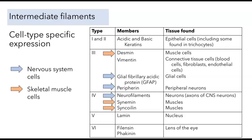Another group of intermediate filaments is expressed in skeletal muscle cells. Desmin, syncoilin are all found in muscles. And yet another type of intermediate filament, vimentin, is found in connective tissue cells — the fibroblasts that secrete collagen, blood cells, and endothelial cells like the ones that line blood vessels.